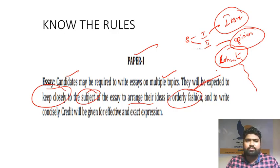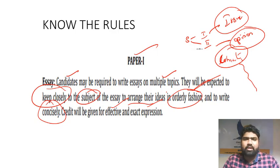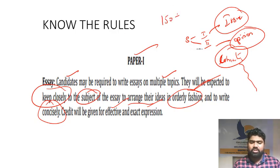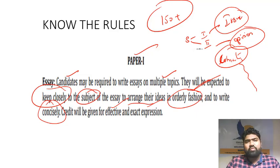Write concisely to make sure that you are precise to the topic. Don't go away from the topic, especially the subject that you take. Credit will be given for effective and exact expression. If you are able to express your ideas in a very proper manner, in a very professional way, there is high scope that you can expect more. Your target should be 150 plus in the essay. If you score less than 150, that shows your strategy of picking the essay is not the proper one.